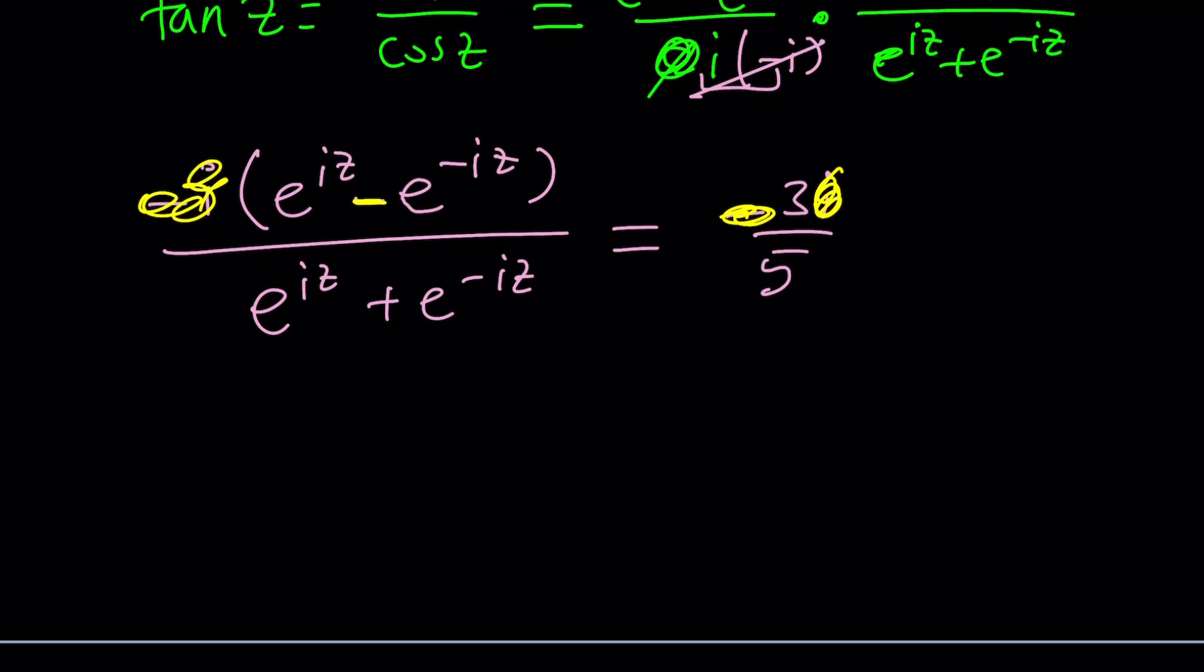Now, what we need to do is cross-multiply. You can also make a common denominator, but I don't think that's necessary. Let's go ahead and just cross-multiply. 5e to the iz minus 5e to the negative iz this way, and then this way, 3e to the iz plus 3e to the negative iz. Awesome.